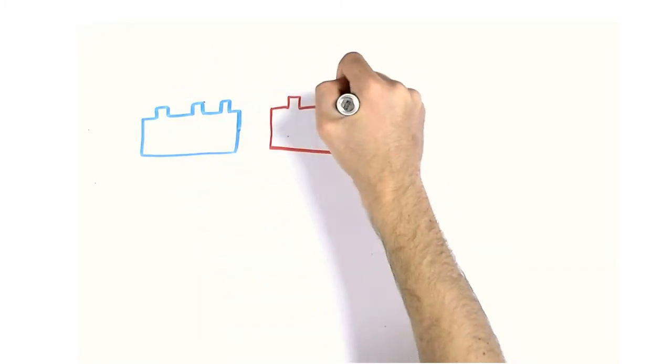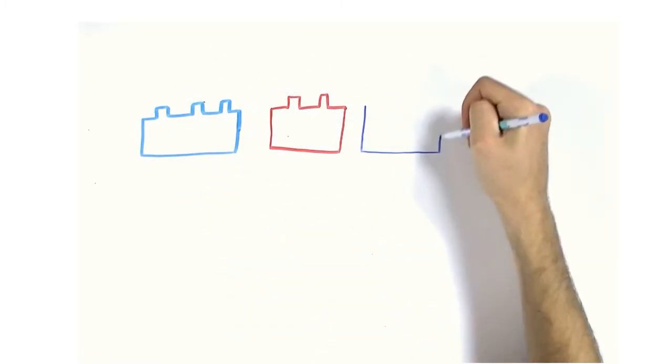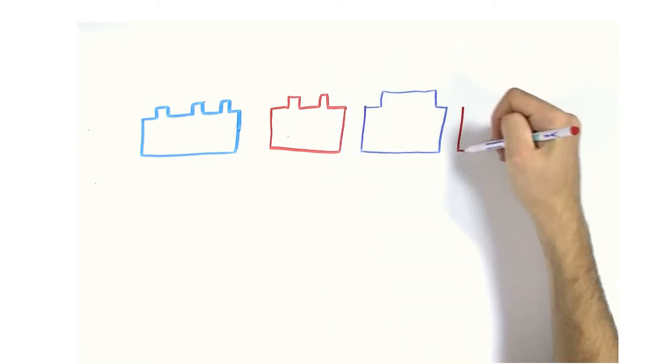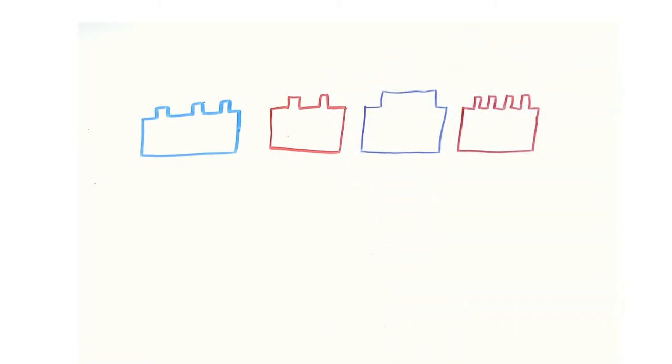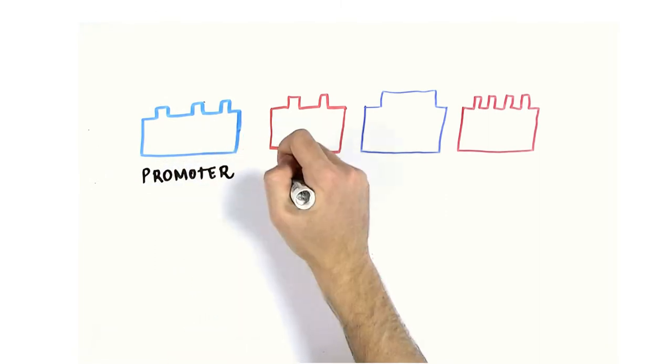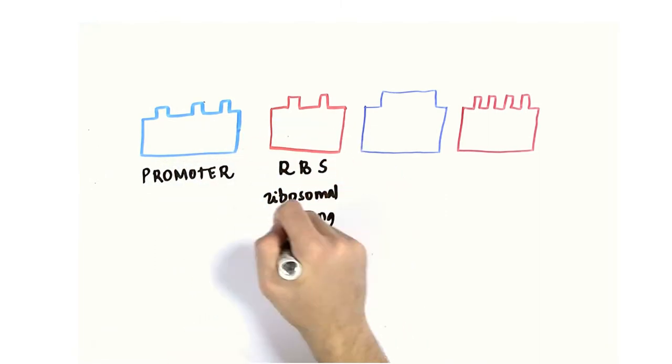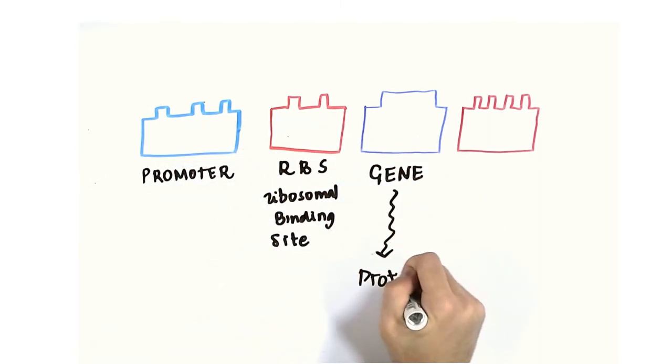The parts can be linked together in specific sequences to form devices which perform a specific function. A simple genetic device would include a promoter, a ribosomal binding site, a protein coding sequence, and a terminator.